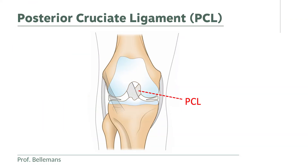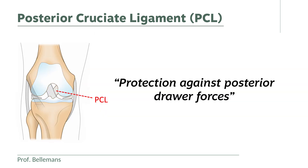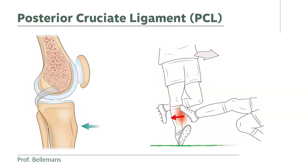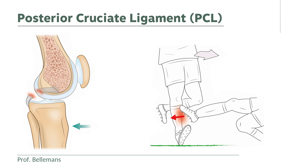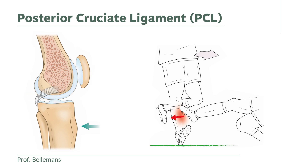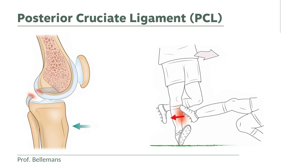The PCL protects the knee against posterior drawer forces — forces that push the lower leg backwards — such as during a frontside tackle.